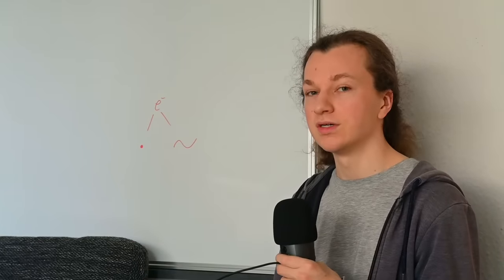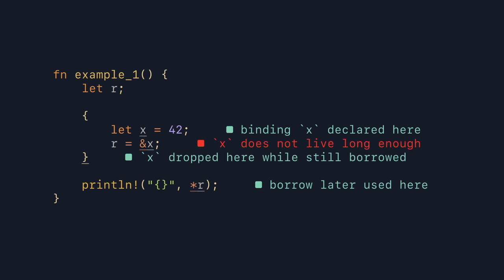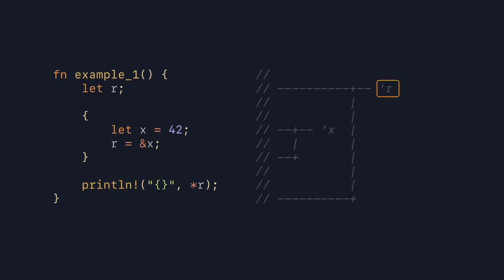We'll start with a classic interpretation and an example from the Rust book. We create a reference to the variable x in an inner scope, store that reference in the variable r, and try to use that in the outer scope to print the value of x. This is not valid code, and the borrow checker will happily complain that x does not live long enough. The Rust book then tries to explain this error using the lifetimes of the variables x and r. The idea is that r clearly lives longer than x, and because r points to x, this is invalid code.